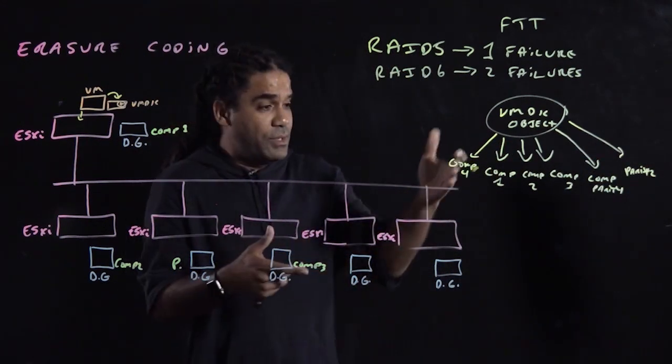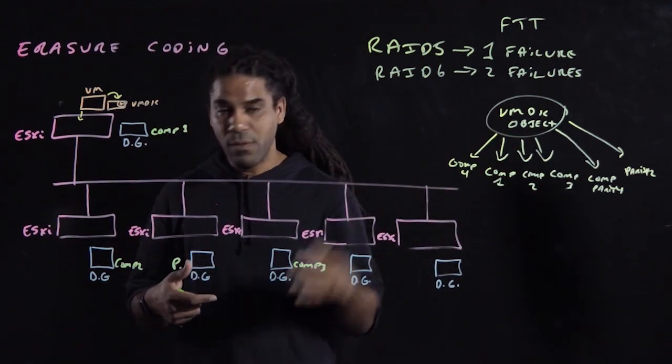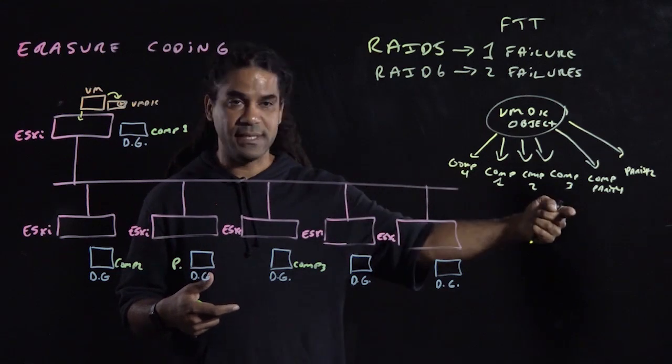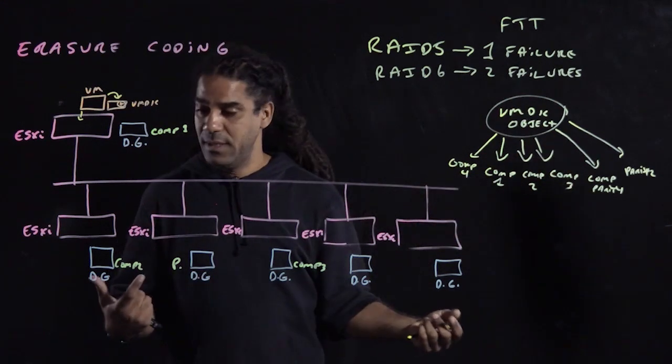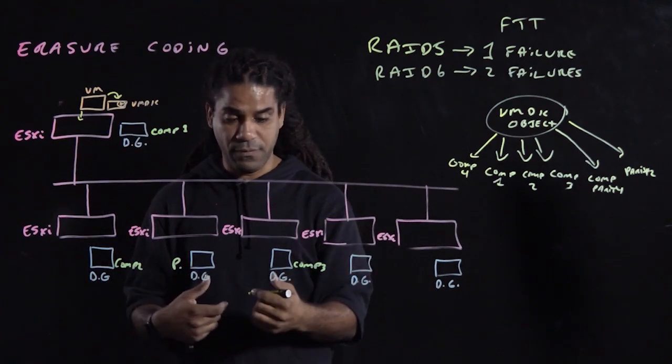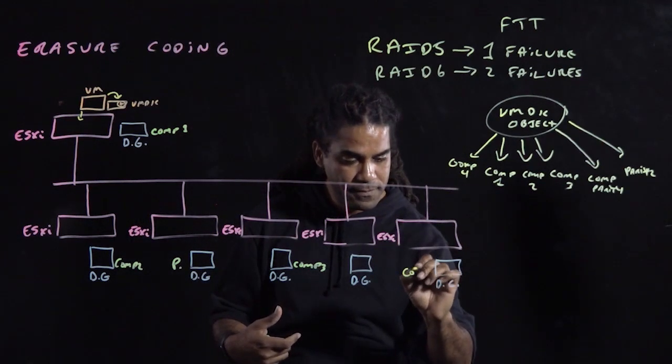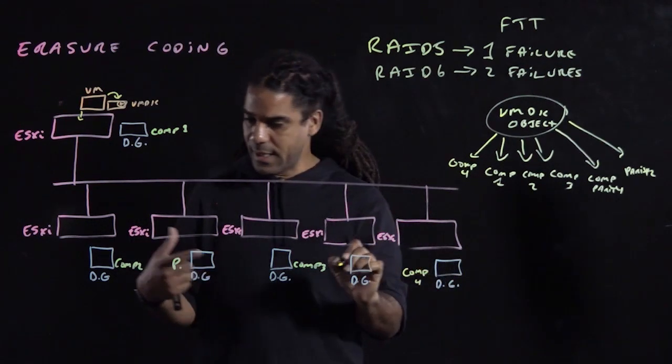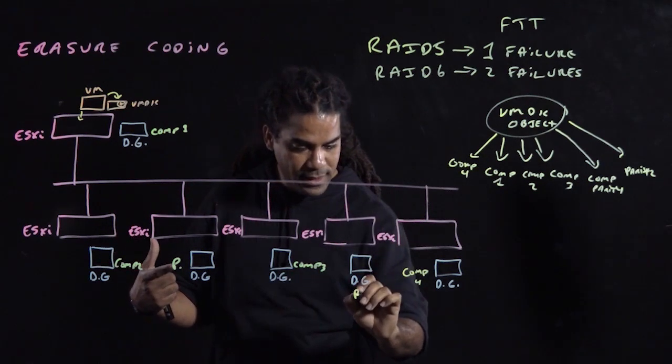So vSAN is going to chop this up into four different pieces and go, OK, now I need four hosts to put the components in, and I need six hosts for the parity. So I have component 1, 2, 3, I need component 4, which could go here or here, let's say we put it here. And I need parity 2, so we're going to put it here.